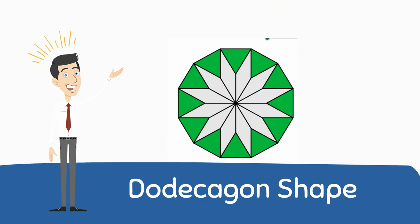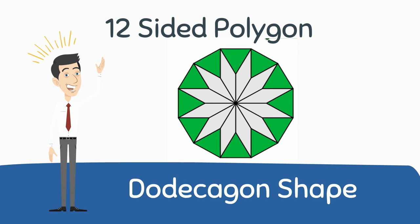Welcome to Moo Moo Math and Science. In this video I would like to talk about a dodecagon. A dodecagon is a 12-sided polygon. A polygon is a two-dimensional shape that has straight lines, is closed, and does not have any curves.